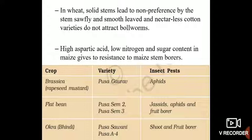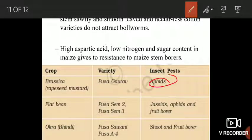Some important examples of crops created to overcome insect attack: In Brassica, a variety known as Pusa Gaurav has been created through plant breeding and is resistant to aphids. In flat bean, two varieties — Pusa Sem 2 and Pusa Sem 3 — have been created, and these are resistant against jassids, aphids and fruit borers.